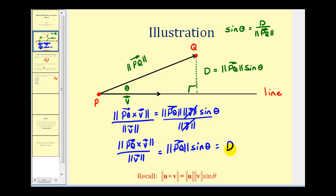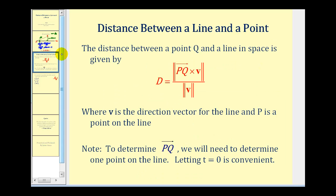That expression equals D, so the distance is given by the magnitude of this cross product divided by the magnitude of vector V. This confirms how we will find the distance between a point and a line. Let's go ahead and take a look at an example.